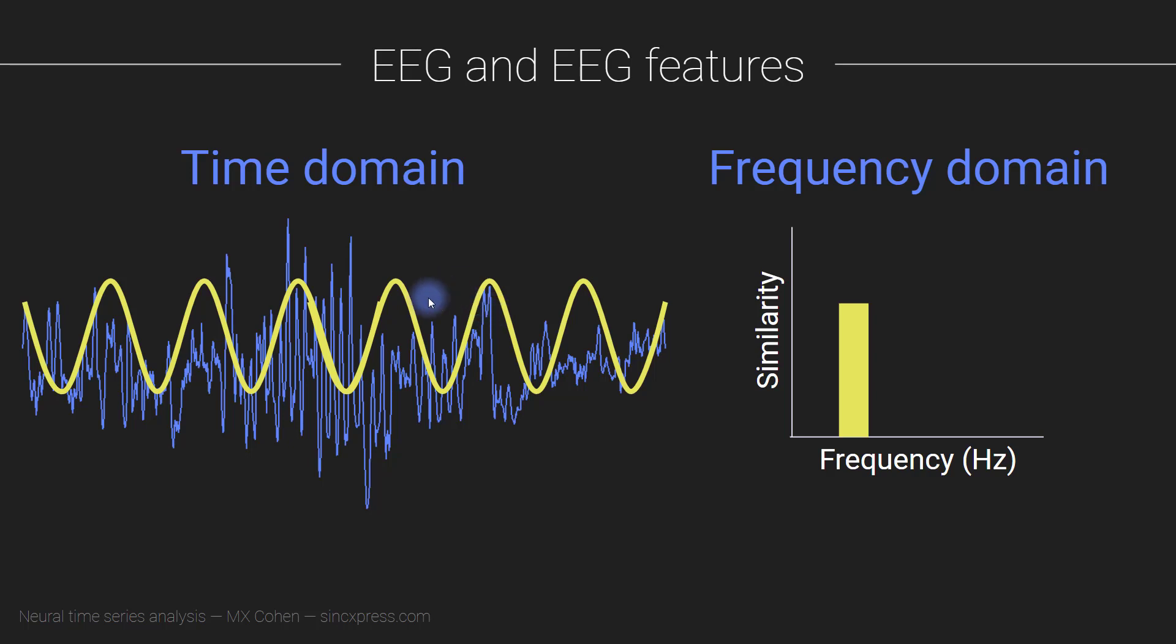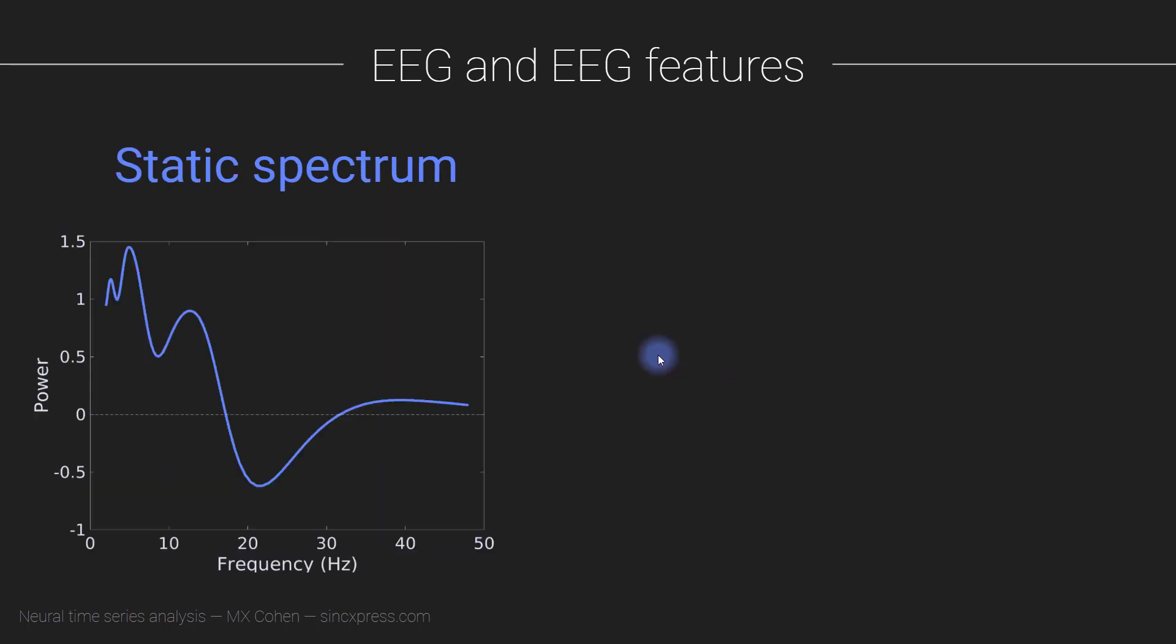So here you see the sine wave going all throughout time from the very beginning of the signal to the very end of the signal. And when you repeat this procedure for many different frequencies, so different sine waves with different frequencies, you are going to end up building up a spectrum that looks like this.